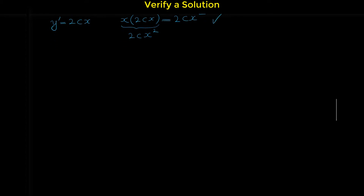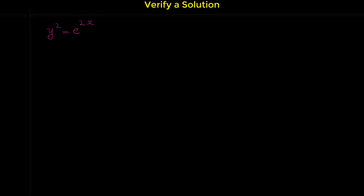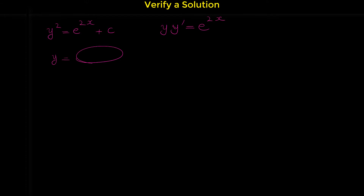Let me show you another example. The given function is y squared equals e to the 2x plus c, and the differential equation is yy prime equals e to the 2x. This given solution is an implicit relation because we don't have y equals something explicitly. We could find y by taking a square root, but that's not necessary.